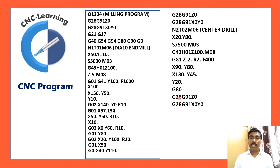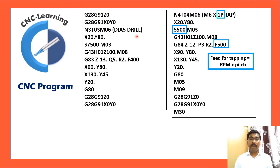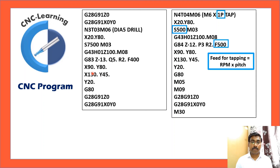For drilling with a 5 mm diameter drill, use G83 — the chip-breaking cycle: Z-13 for 13 mm final depth, Q5 so the tool breaks the chip every 5 mm, R2 for the R-plane, F500 feed rate. The hole coordinates are the same as for center drilling: X20, Y80; X90, Y80; X130, Y45; X130, Y20. The entire program is the same as the center drilling section except for the G83 cycle. After drilling, cancel the cycle with G80.